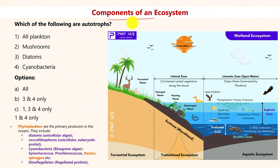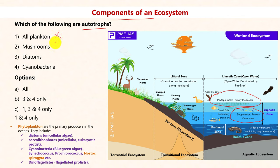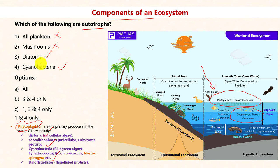Which of the following are autotrophs? Autotrophs are the primary producers which can produce their own food. Not all plankton are autotrophs — phytoplankton are primary producers and autotrophs, whereas zooplankton are primary consumers and heterotrophs. Mushrooms survive on dead and decaying matter and are called saprotrophs, not autotrophs. Diatoms and cyanobacteria are examples of phytoplankton — primary producers in the ocean — and hence autotrophs, along with dinoflagellates. The answer is 3 and 4 only.